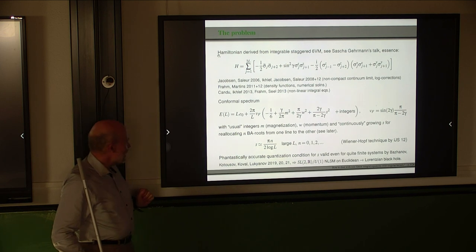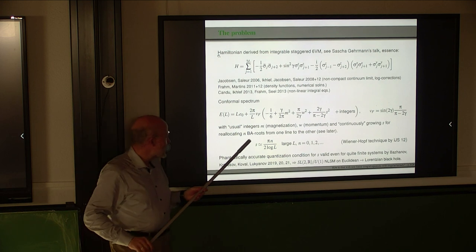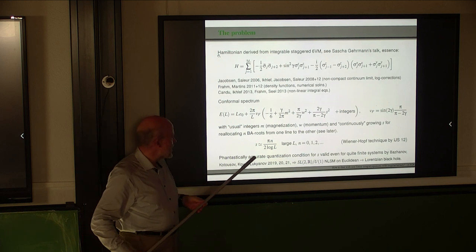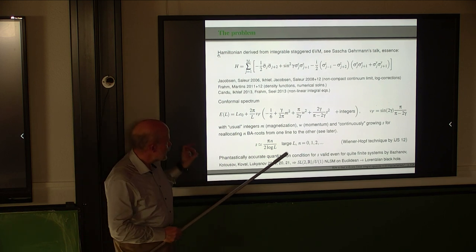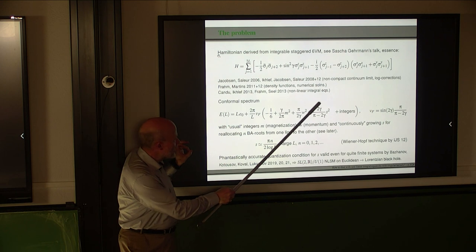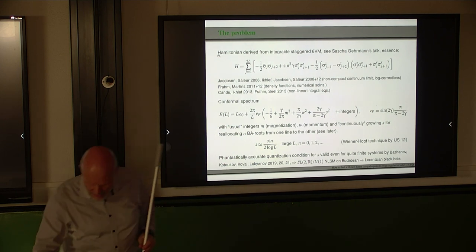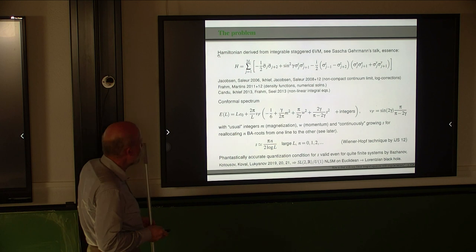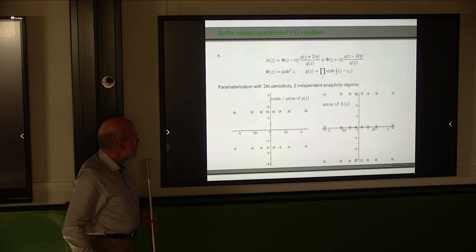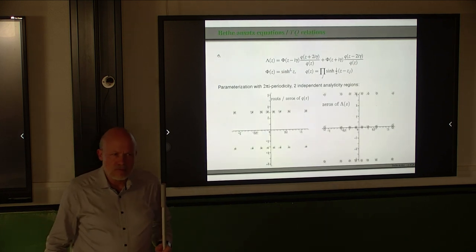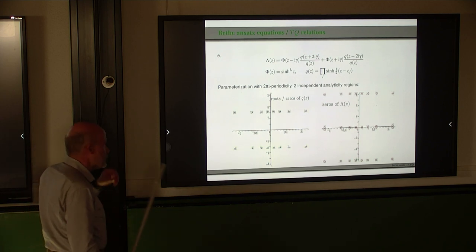What we want to do — Mücin, Azari, and I — is to derive these numbers for arbitrary values of L, exactly. For that, we have to start with the integrability properties.